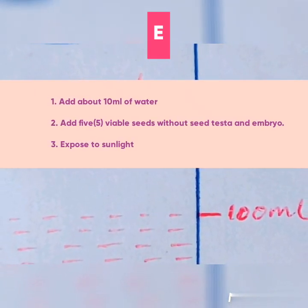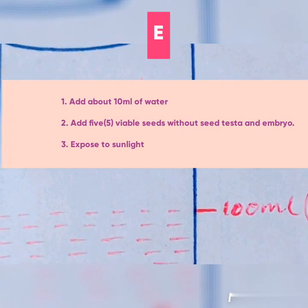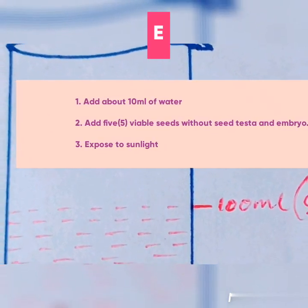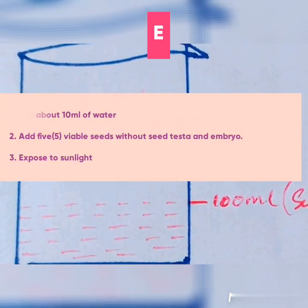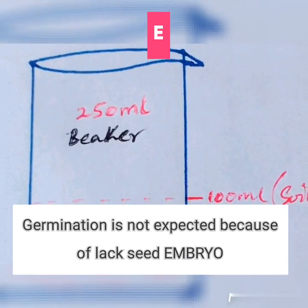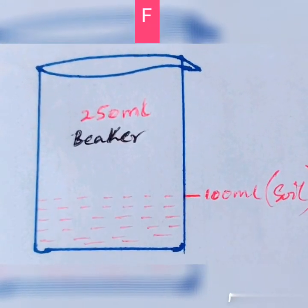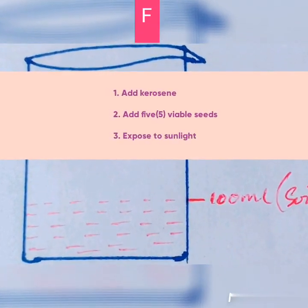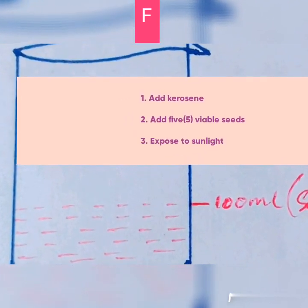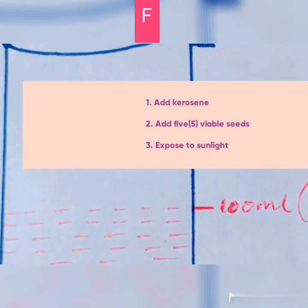To the next beaker labeled E, the soil is moist and there are viable seeds; however, the seeds were without an embryo. Germination is not expected due to the absence of an embryo.